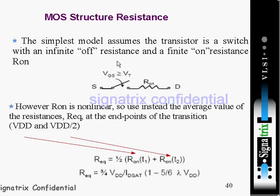Coming to the MOS structure resistance, the simplest model assumes the transistor is a switch with infinite off resistance and finite on resistance. When using MOS transistor in digital as a switch, when applying voltage greater than threshold voltage, your MOS transistor will work with finite resistance.